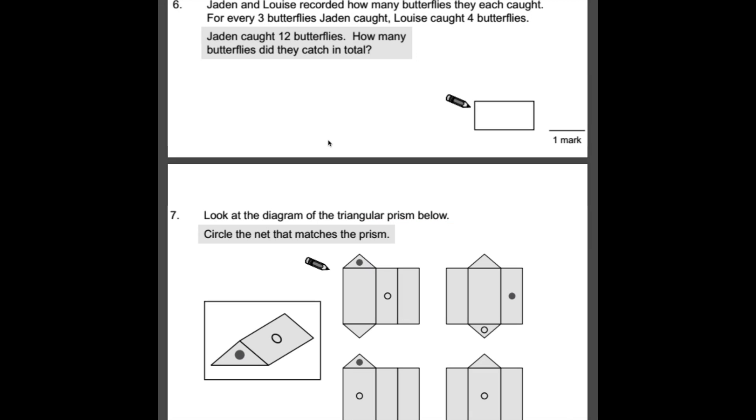Number 6. Jaden and Louise recorded how many butterflies they each caught. For every 3 butterflies Jaden caught, Louise caught 4 butterflies. Jaden caught 12. How many butterflies did they catch in total? There's a few little points there that could catch you out. So be extra careful with this one. So Jaden caught 12 butterflies. Now it says that for every 3 that he catches, Louise catches 4. So what we need to do is how many 3s go into 12? So we know that 4 times 3 equals 12. So he's got 4 lots of 3. So remember, every time he gets 3, Louise gets 4. So he's already got 4 lots of 3. So she should have 4 lots of 4. 4 times 4 is 16. So Louise has 16 and Jaden has 12. We need to add them together because it says how much did they catch in total. 12 adds 16 is 28.